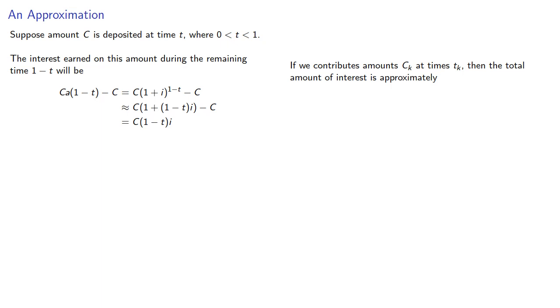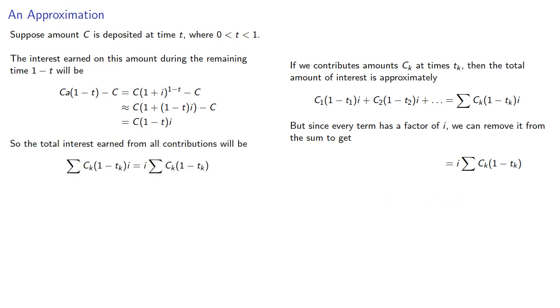Now that's just a single contribution. If we contribute amount ck at times tk, then the total amount of interest is going to be approximately... But since every term has this factor of i, we can remove it from the sum. And so the total interest earned from all contributions will be...